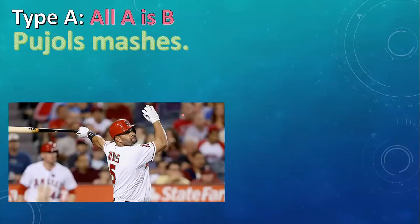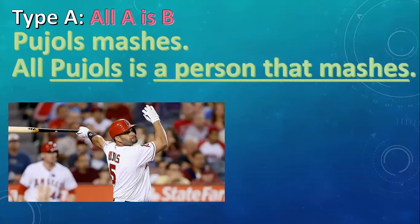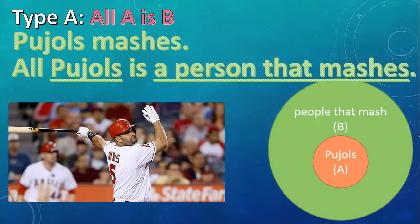Here's another weird one. Let's say: Pujols mashes. He mashes home runs. This is going to be another all-Pujols statement. One thing to notice is that you have to have the word is or are in there — the verb to be somewhere in there. So how do you do that here? We use this weird all again. We don't mean every single piece of Pujols is a masher. We mean all of the things in the category of Pujols — that one guy. All Pujols is a person that mashes. So of all the people that mash home runs, Pujols is in there somewhere. Notice you always have to have the word is. If it's not there, you need to put it in and rewrite the predicate so that it makes sense.